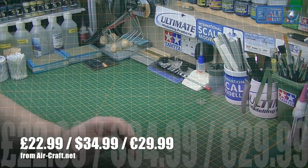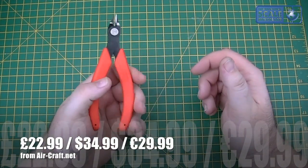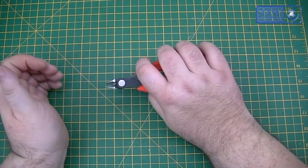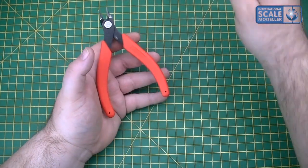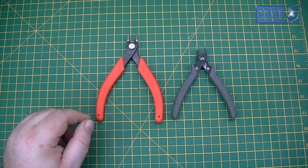Now these are a lot softer sprung than the photo etch ones. Whether that's because I've been using them, I don't know, but I don't remember these being as strong. These are a bit easier on the hand.